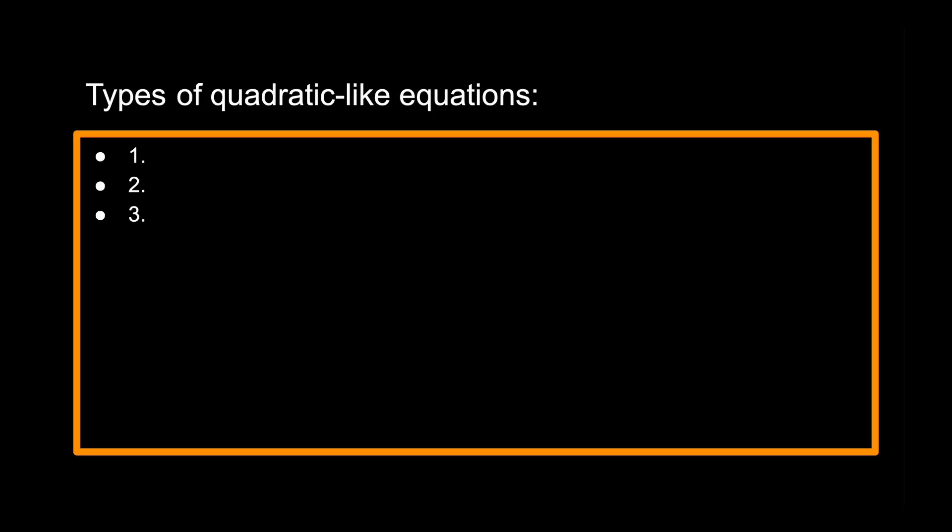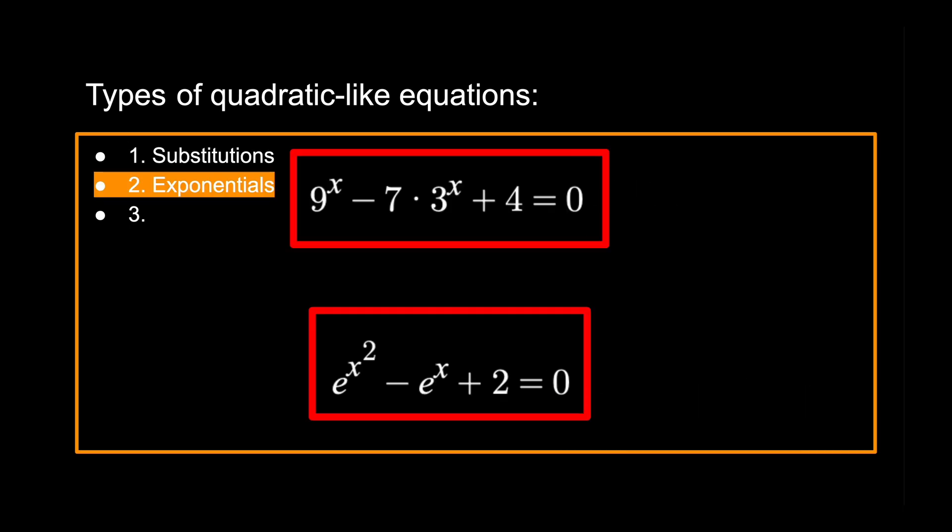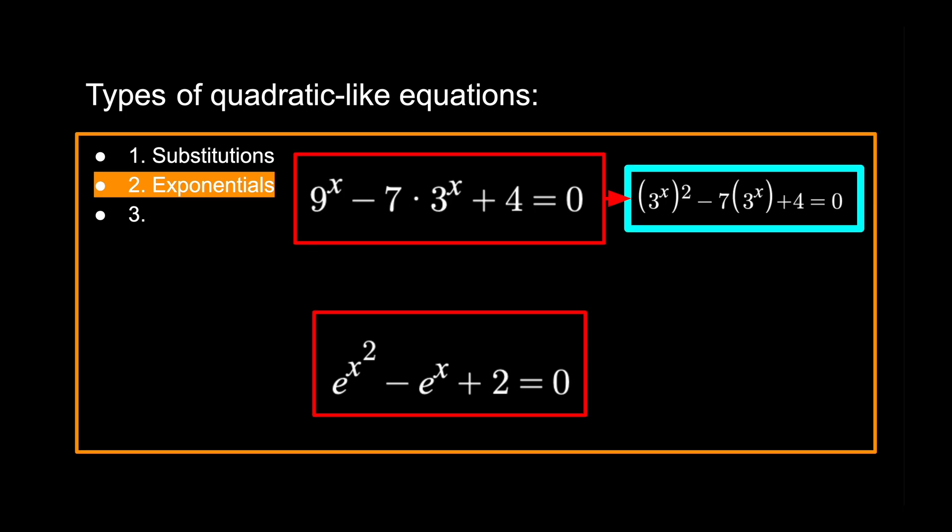There are usually three kinds of quadratic-like equations. The first are the substitutions. Swap out the variable, and you're done. The second kind are the exponentials. Be careful about notations. Like a YouTube short student scroll, power towers are evaluated from top to bottom. So this is a quadratic-like. Well, this is not.